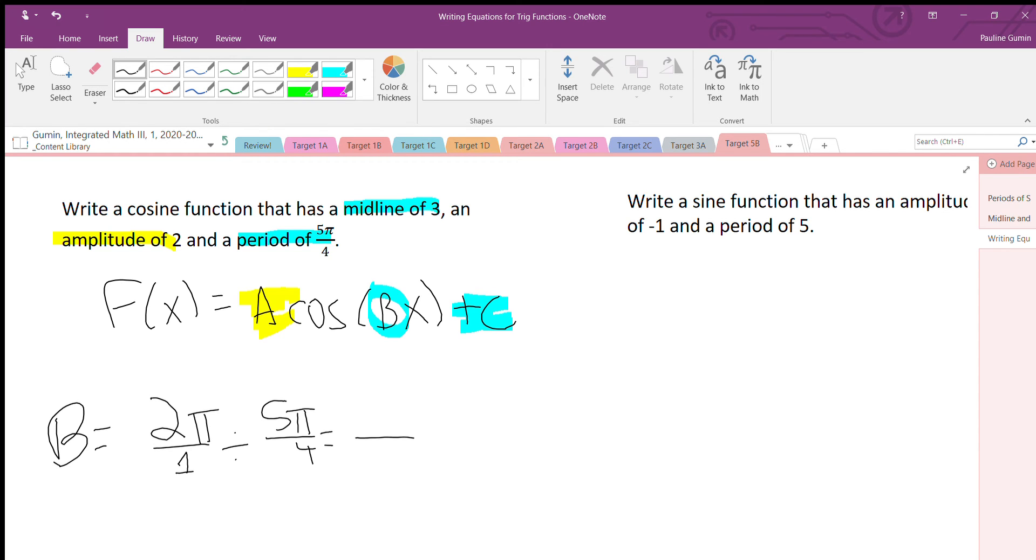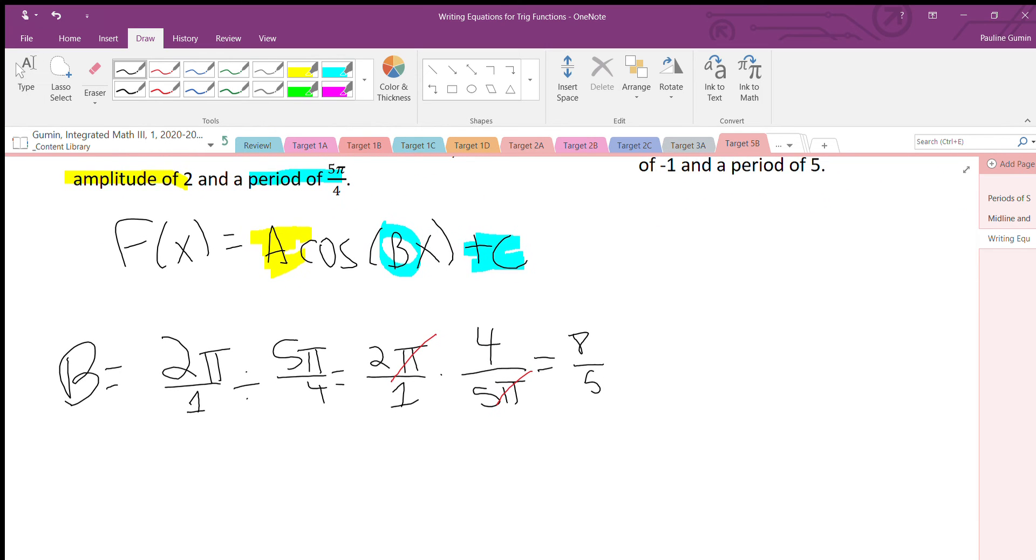So let's multiply by the reciprocal. I only see one thing that can be reduced. That's our π's. Not too bad. And I get 8 fifths. Alright. Now I can plug everything in.